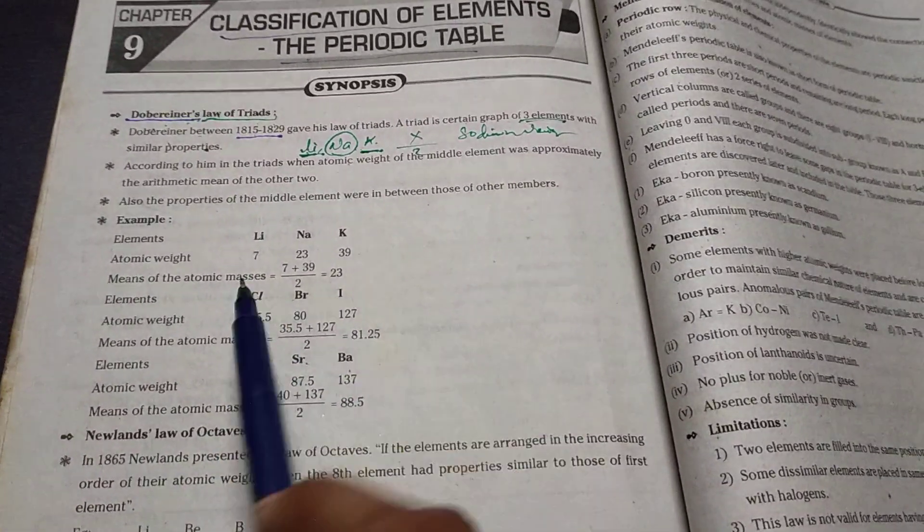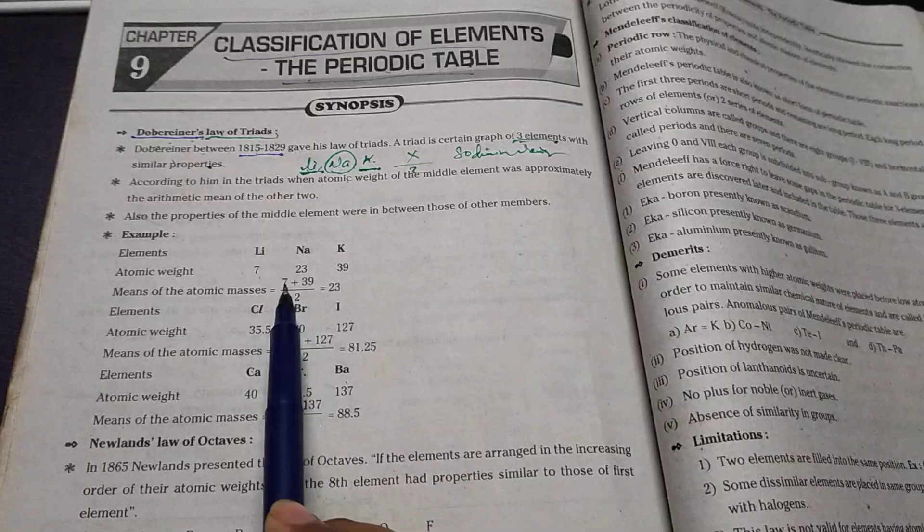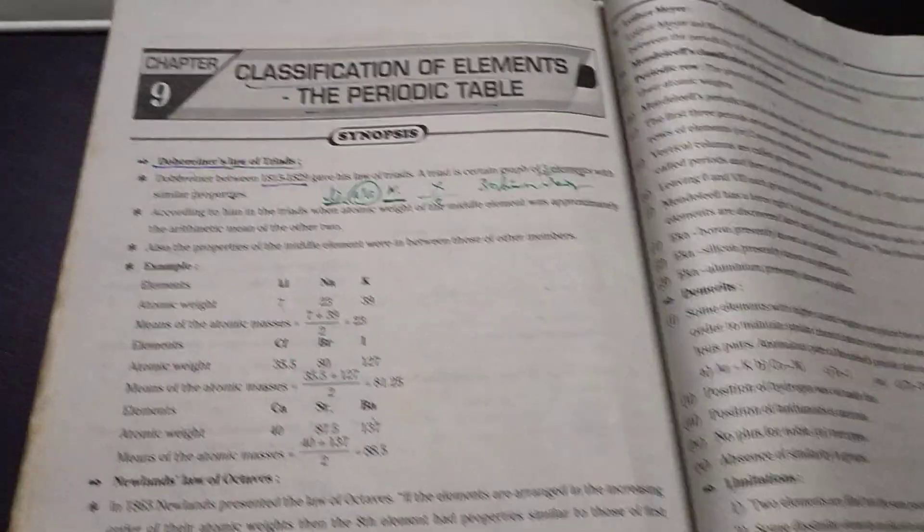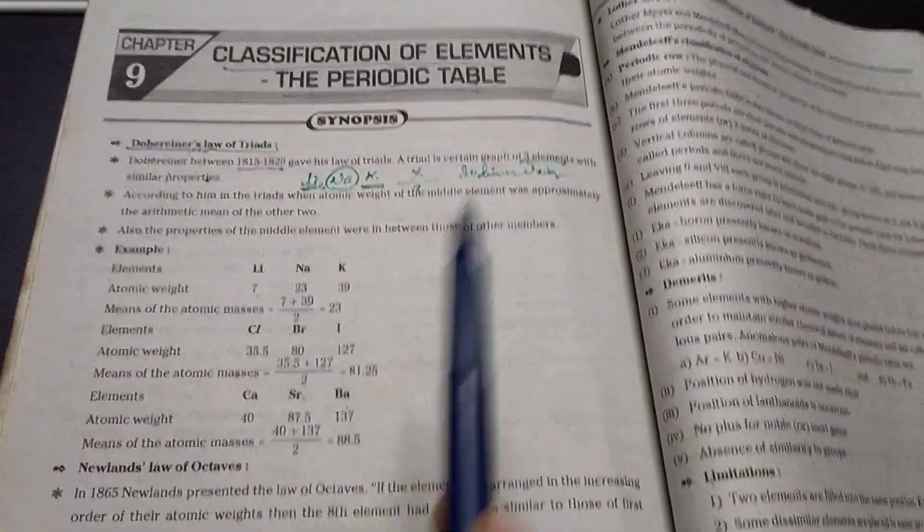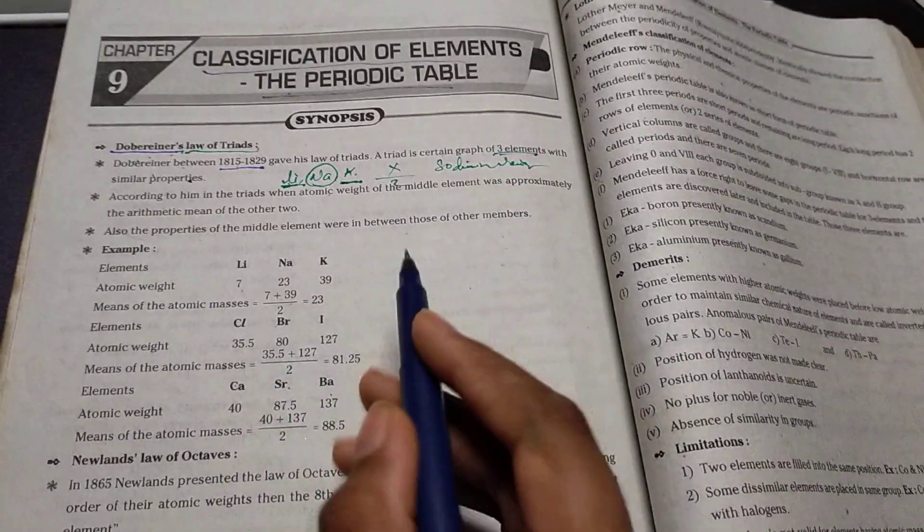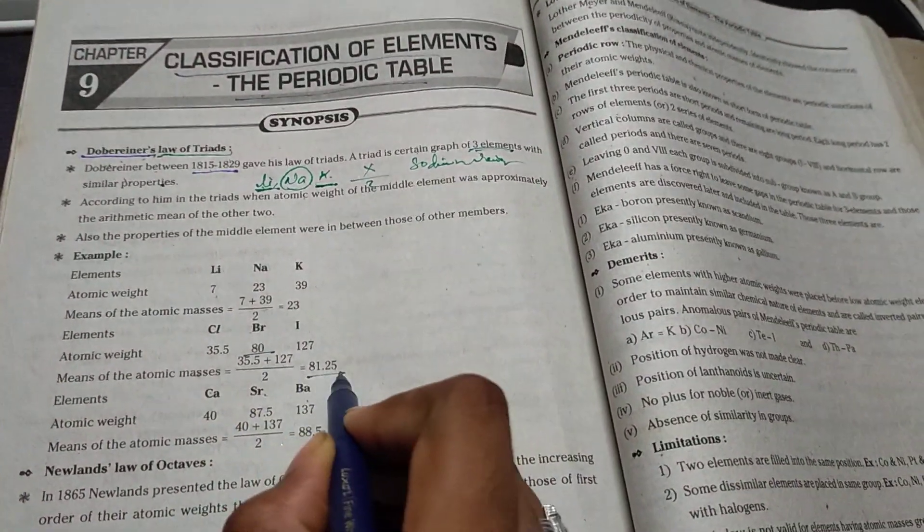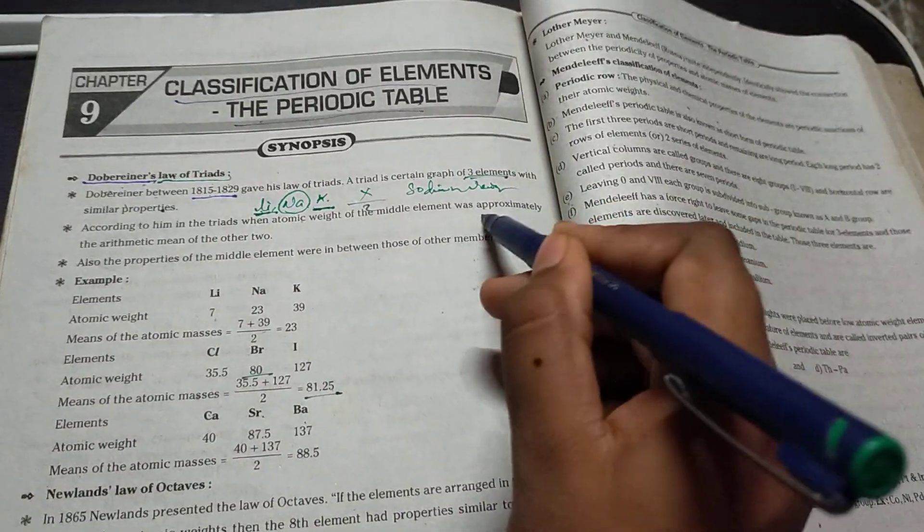The arithmetic mean, add them and divide by two, you can get 23, that middle one's mass. Here, see, we have already mentioned that it's approximately. It is just approximately right, so it will come under Dobereiner's law of triads.